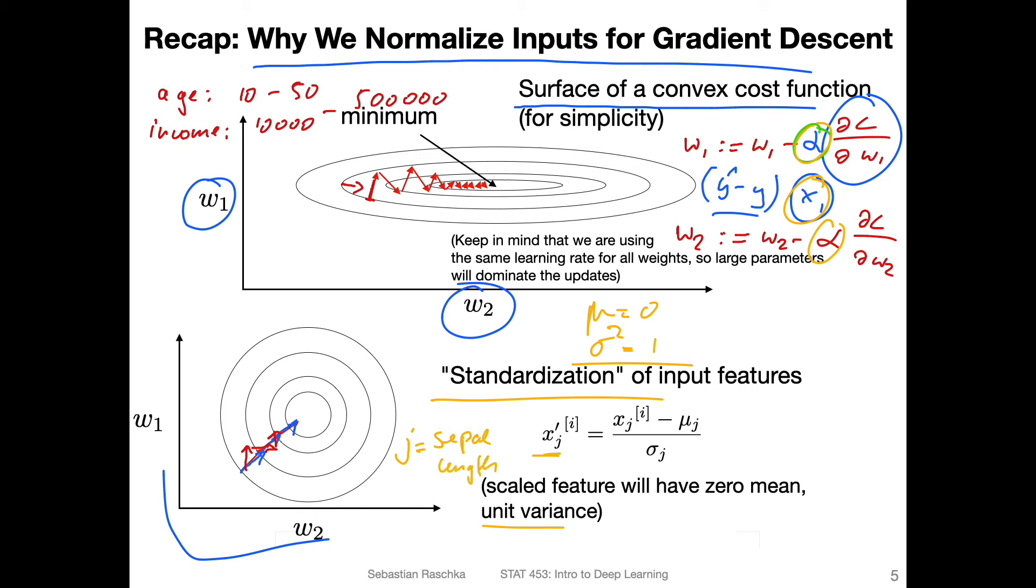And how we do that is we subtract the feature mean. So here, the feature mean, this would be over all flowers, so one over n, right? Let me do this properly here.